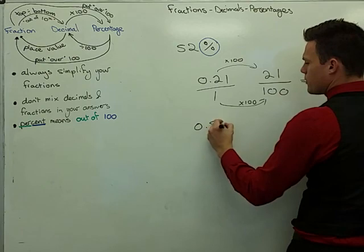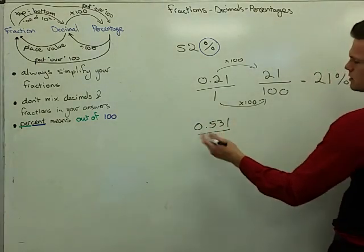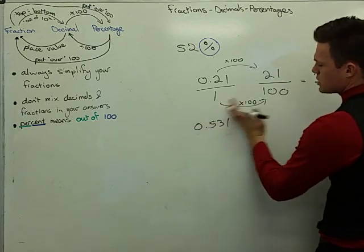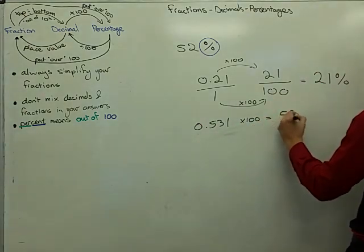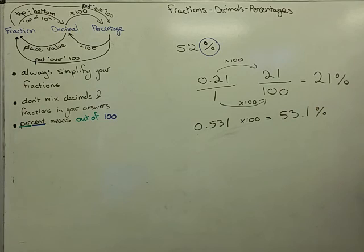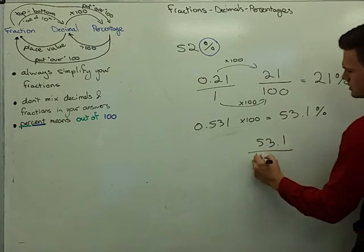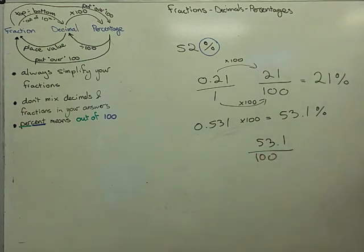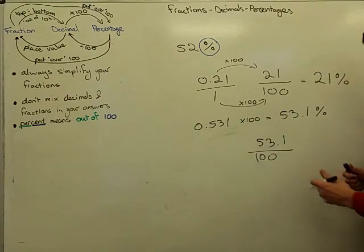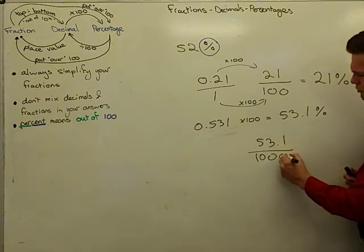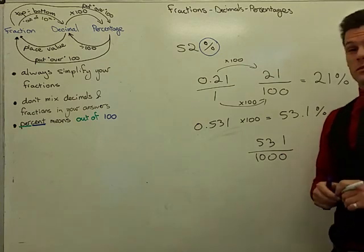It gets a little bit more complicated if I have a more complicated decimal. Let's say I had zero point five three one. The same process applies — it's written as over one, so I would times that by a hundred, to find my percent, which is fifty-three point one percent. Now, we try not to mix decimals and fractions — that's technically fifty-three point one over a hundred. As a fraction, I'd write that as over a thousand — I'd multiply top and bottom by ten, getting five hundred and thirty-one over a thousand, then simplify.